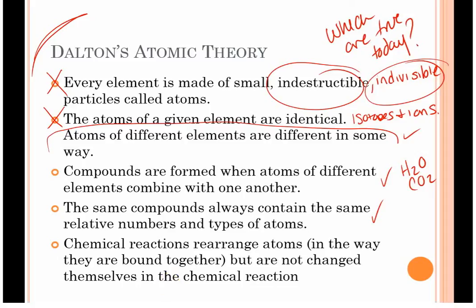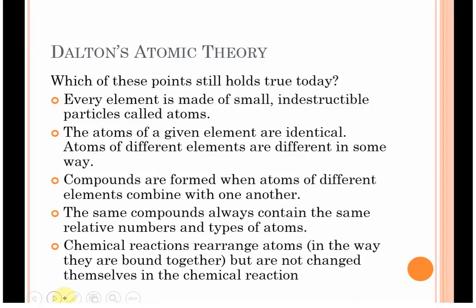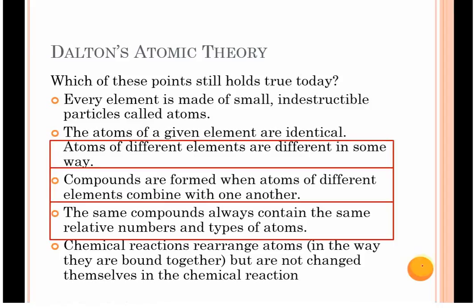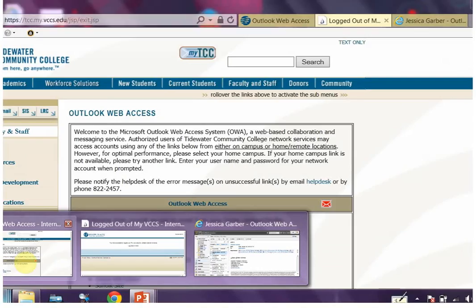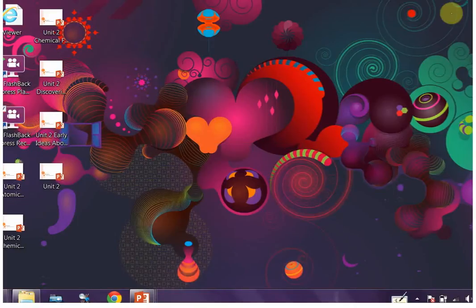Chemical reactions change atoms, rearrange atoms in the way they are bound, but are not changed themselves in the chemical reaction. Again, we can't really say that. Sorry, I didn't finish my last slide, I guess. We can't say this because we do have radiation, we do have nuclear power. We have to consider that in the grand scheme of things. Those reactions do change atoms. So, with that in mind, that is the end of early ideas about the atom.